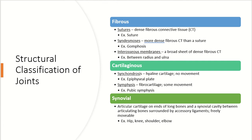Our last structural classification is synovial joints. These have articular cartilage on the end of a long bone and a synovial cavity between the articulating bones, surrounded by various accessory ligaments. These are freely movable joints — the big obvious ones like your hips, knees, shoulders, and elbows.